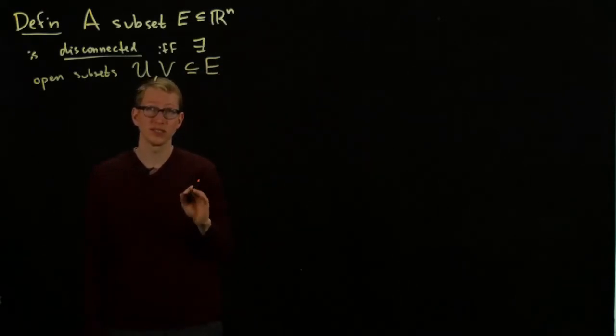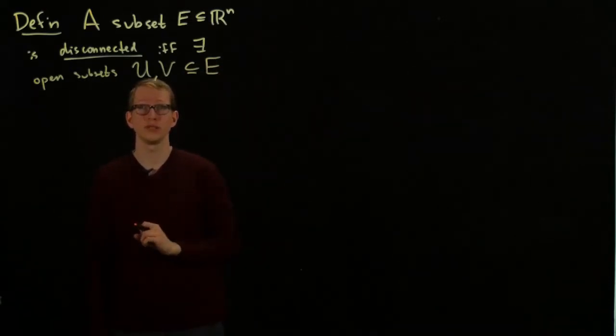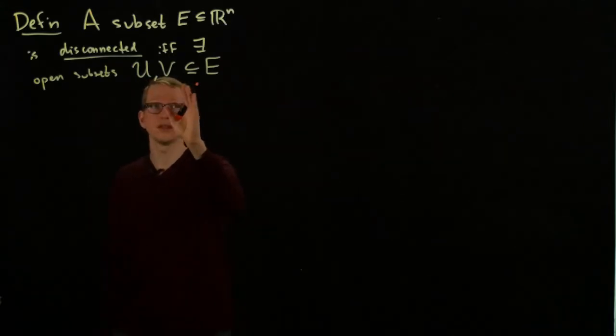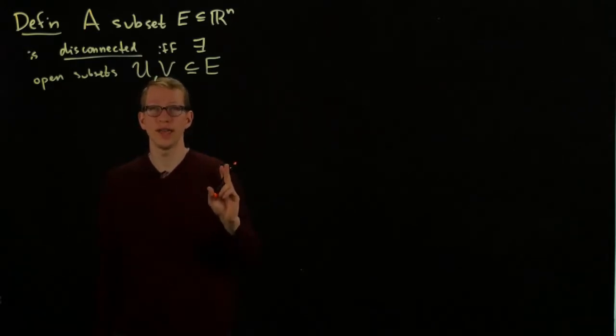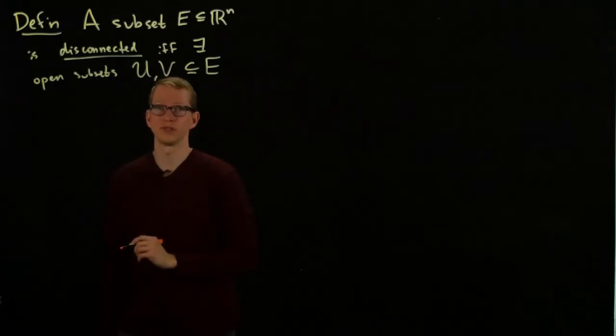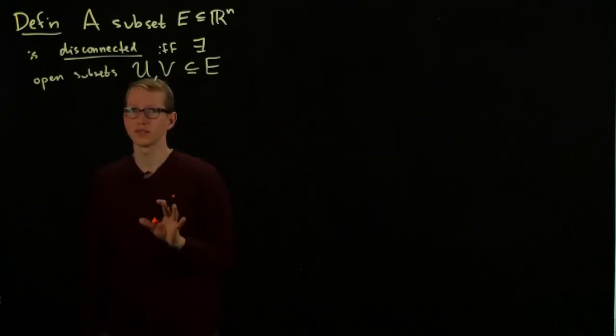Remember, this definition is slightly different than what it means to have an open subset of R^n. A subset of E is open if and only if there exists an open set in R^n such that when you intersect it with E, it equals that open subset.